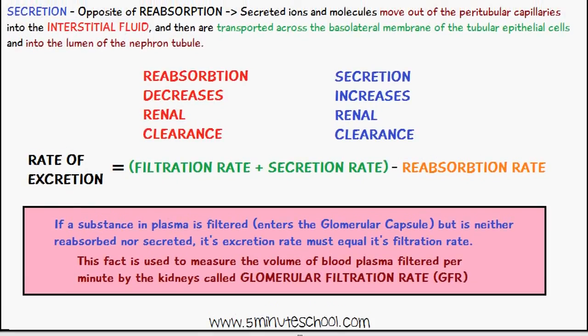If a substance in the plasma is filtered and enters the glomerular capsule but is neither reabsorbed nor secreted, its excretion rate must equal its filtration rate. This will be discussed in more detail in the next video using a compound called inulin — a link is included in the description. This principle is used to measure the volume of blood plasma filtered per minute by the kidneys, which is the glomerular filtration rate (GFR).